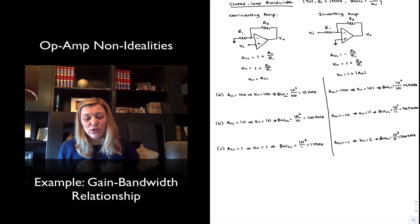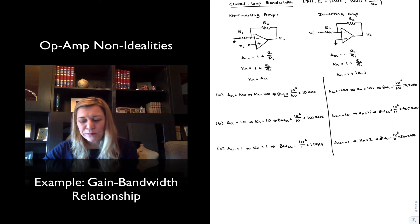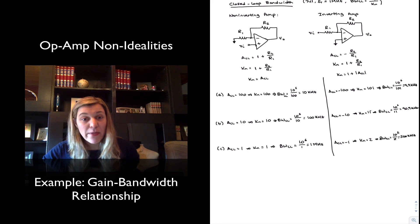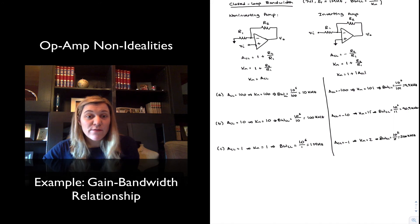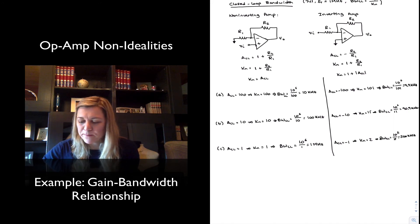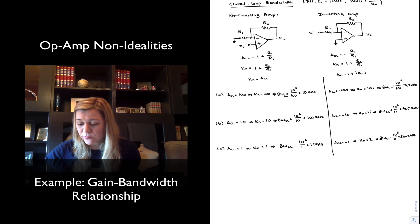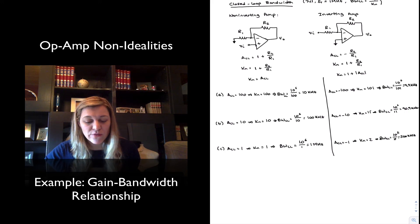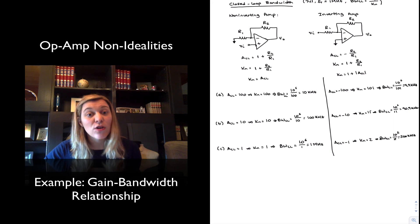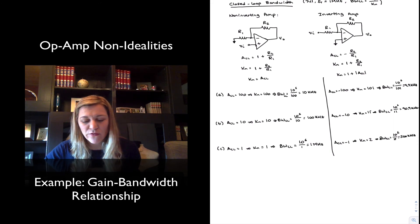Notice that for high values of ACL, the inverting and non-inverting amplifiers have essentially the same bandwidth for the same absolute value of signal gain. As the signal gain becomes lower, the bandwidth of the inverting amplifier starts to decrease relative to the non-inverting amplifier. At a gain of 1, the bandwidth is half for the inverting amplifier — an important thing to remember.